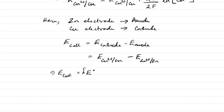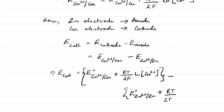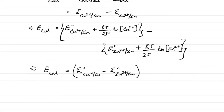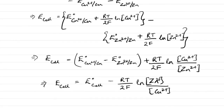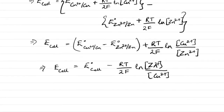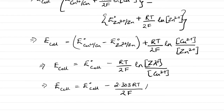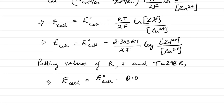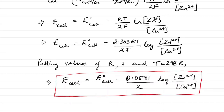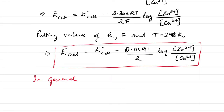Substituting the values for the electrode potentials of copper and zinc, we get: E(cell) = E°(cell) − (RT/2F) log([Zn²⁺]/[Cu²⁺]). Converting to base-10 logarithm and substituting R, F, and T = 298 K, this becomes: E(cell) = E°(cell) − (0.0591/2) log([Zn²⁺]/[Cu²⁺]).